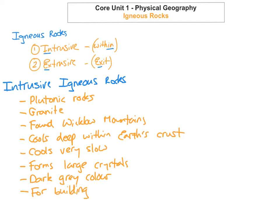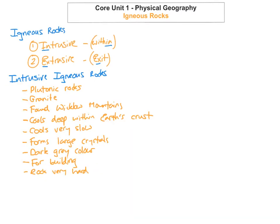Granite is also used on kitchen counters. One thing to note is that it's a very hard rock, so it's very resistant to erosion. The three minerals that make up granite are feldspar, quartz, and mica.